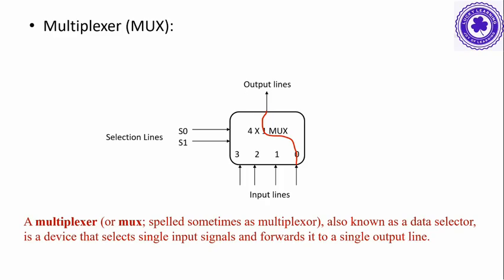A multiplexer, or MUX, also known as a data selector, is a device that selects a single input signal and forwards it to a single output line. Now we will see how to construct a common bus system for four registers, each register having four bits.